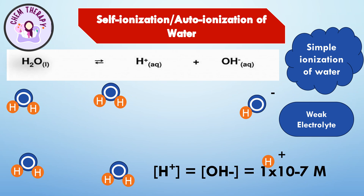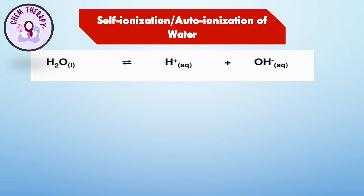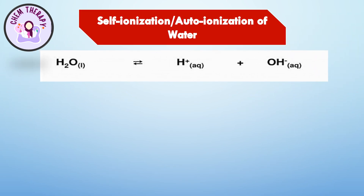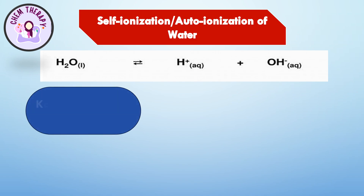The experimentally determined concentrations of hydrogen and hydroxyl ions at 25°C are 1×10⁻⁷ molar. We can write the equilibrium constant expression for ionization of water: the equilibrium constant equals the concentration of products divided by the concentration of reactants. So, Kc = [H⁺][OH⁻] / [H₂O].